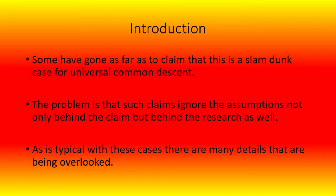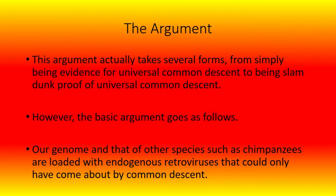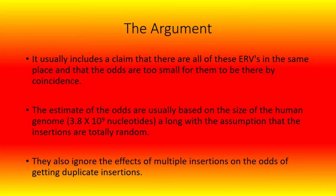There are many details that are being overlooked. This argument actually takes several forms, from simply being evidence for universal common descent to being slam dunk proof of universal common descent. The basic argument goes as follows: our genome and that of other species, such as chimpanzees, are loaded with endogenous retroviruses that could only have come about by common descent. It usually includes a claim that there are all these ERVs in the same place and that the odds are too small for them to be there by coincidence. The estimates of the odds are usually based on the size of the human genome, which is 3.8 billion nucleotides, along with the assumption that the insertions are totally random. They also ignore the effect of multiple insertions on the odds of getting duplicate insertions.